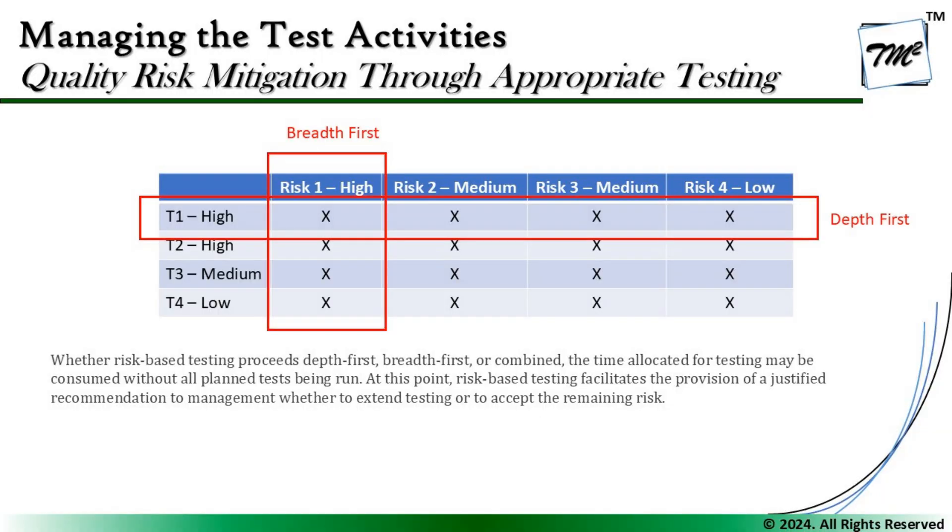Risk-based testing facilitates a justified recommendation to management whether to extend testing or to accept the remaining risk. If you run out of time, the only options are to extend the testing or to accept the risk for the time being and address it in the future. With this, we have a complete understanding of what it takes to mitigate a risk and what the testing team must plan and perform. Feel free to comment below with any queries. Thanks for watching, and happy learning!